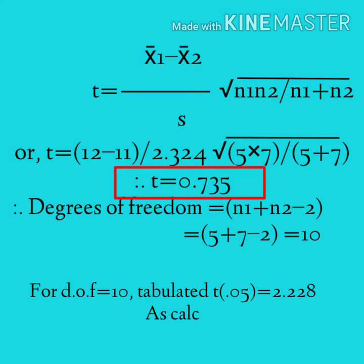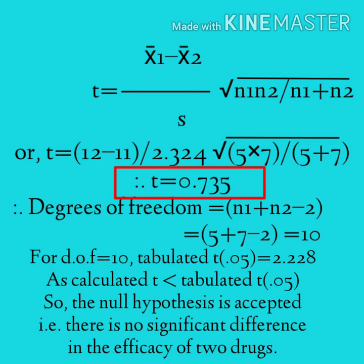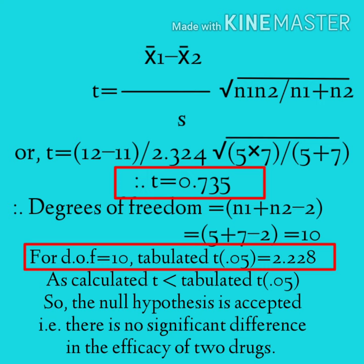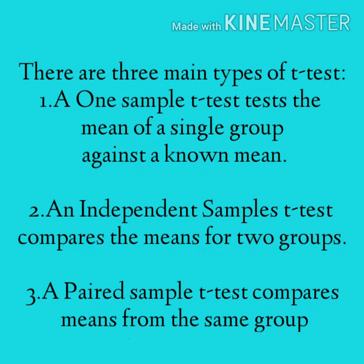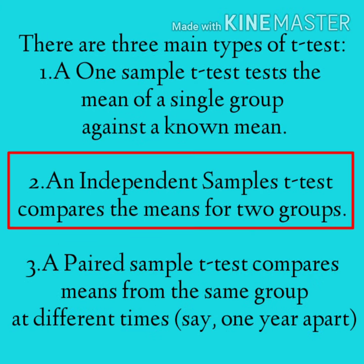For degrees of freedom 10 at the 5% level of significance, the tabulated (critical) value of t from the t-table is 2.228. The calculated t is 0.735, which is less than the tabulated t of 2.228. Therefore, the null hypothesis is accepted — there is no significant difference in the efficacy of the two drugs.